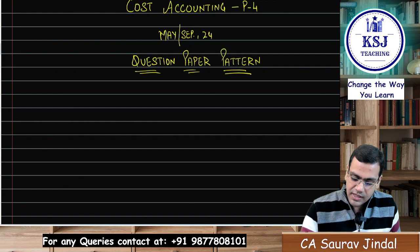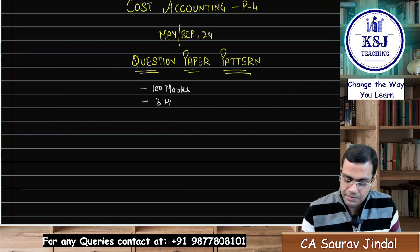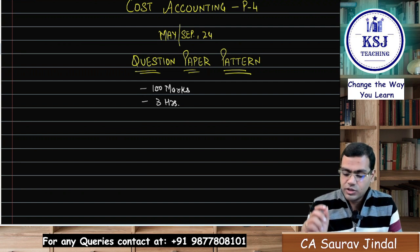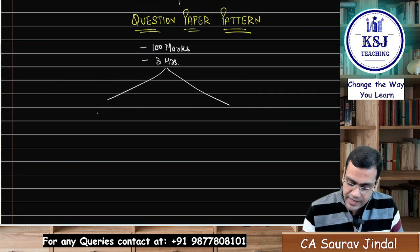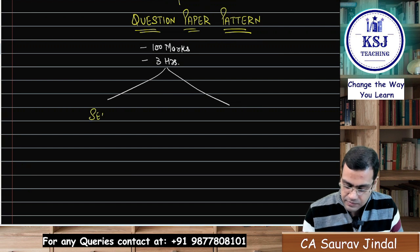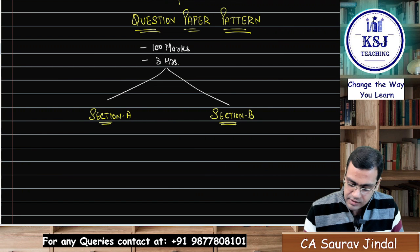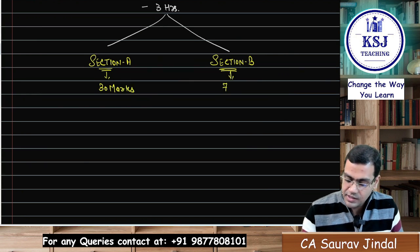First and foremost, this paper is going to be for 100 marks and you will be getting three hours for attempting the paper. That means you will need a lot of practice to attempt all the questions in these three hours. This question paper has been divided into two segments: Section A and Section B. Section A will be for 30 marks and Section B will be for 70 marks.